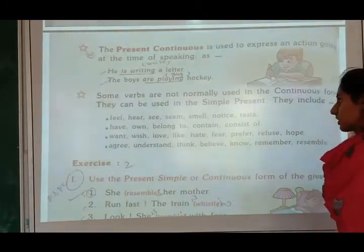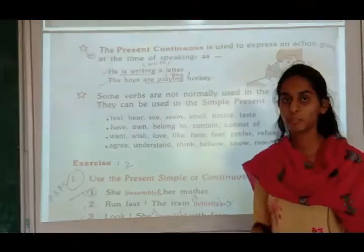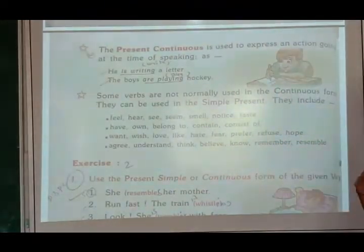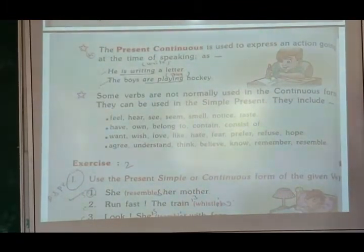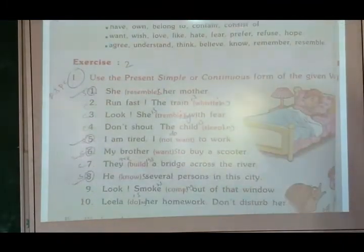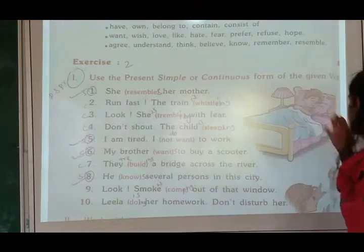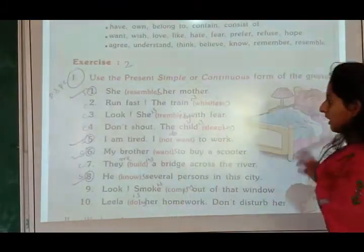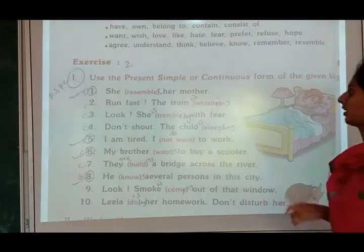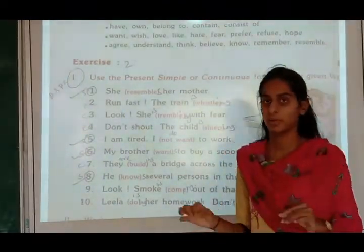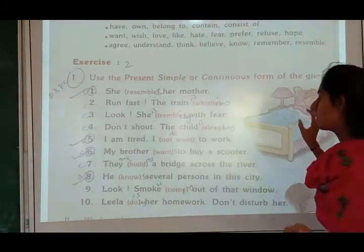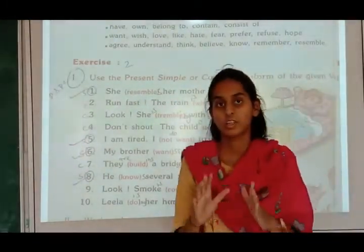Some verbs are not normally used in the continuous form; they can only be used in the simple present. These include: smell, notice, taste, have, love, like, hate. Exercise: use the present simple or continuous form of the given verb. 'She resembles her mother' — we cannot use present continuous, so we use present simple by adding S. 'Run fast, the train whistles' — 'the train is whistling' uses present continuous.